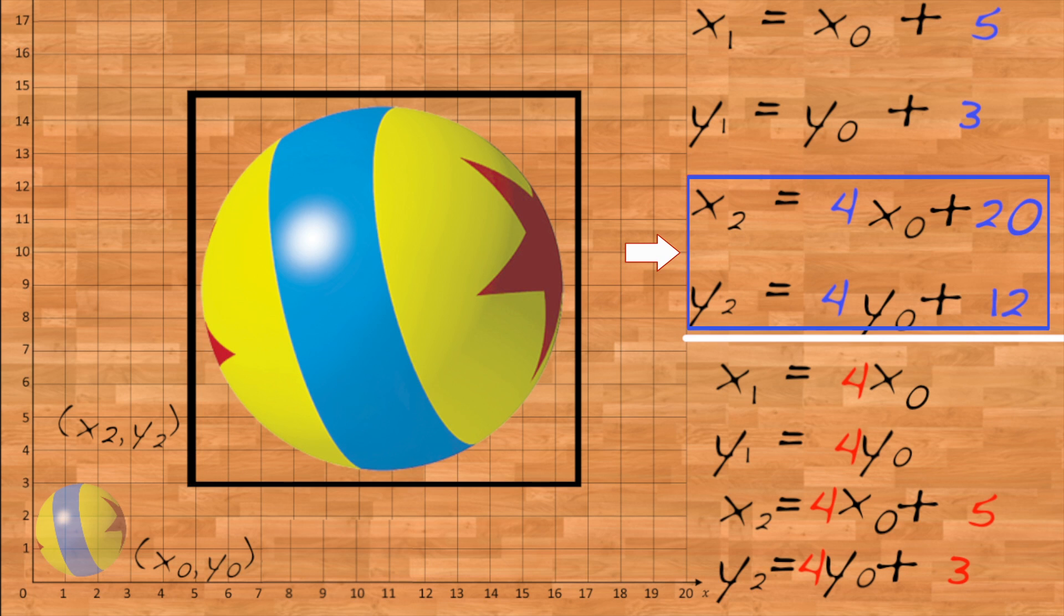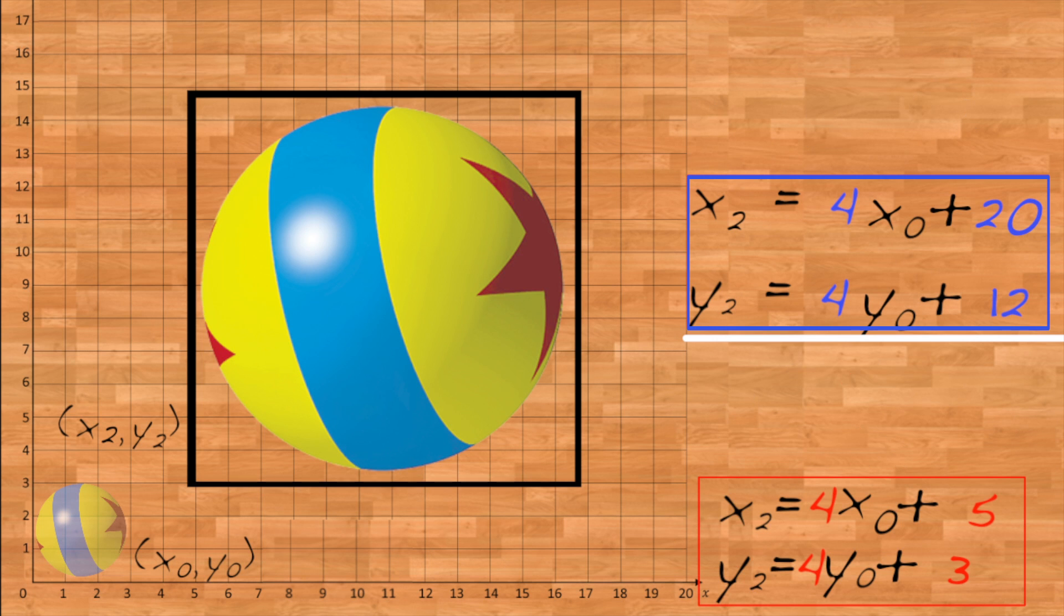Clearly, the blue equations aren't the same as the red equations. But in either case, we can write the result of combining scaling and translation in the form x2 equals s times x0 plus tx, and y2 equals s times y0 plus ty.